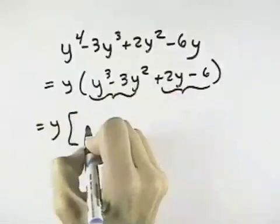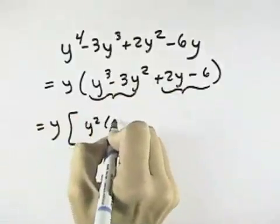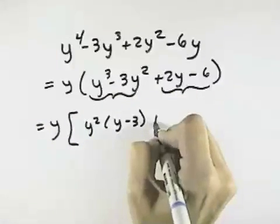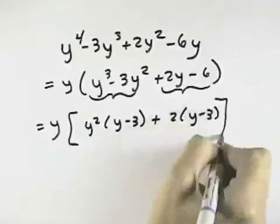So if we try that, in the first two we have a y squared in common, leaving a y minus 3. In the second two we have a 2 in common, also leaving y minus 3.